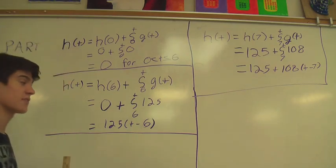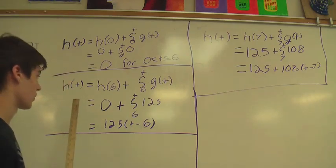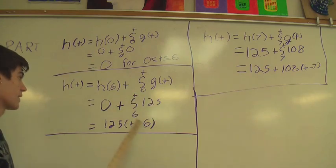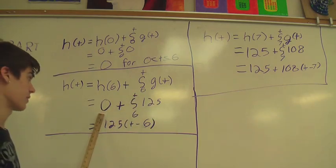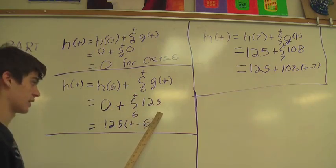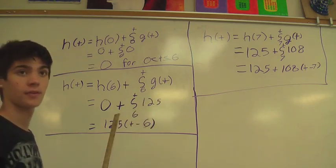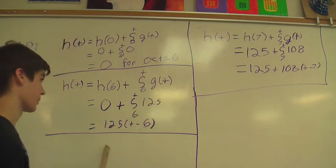From 6 a.m. to 7 a.m., the equation was modeled by this. He hadn't shoveled any snow yet, so it started at 0 and added the 125 feet of snow that he shoveled in the first hour.